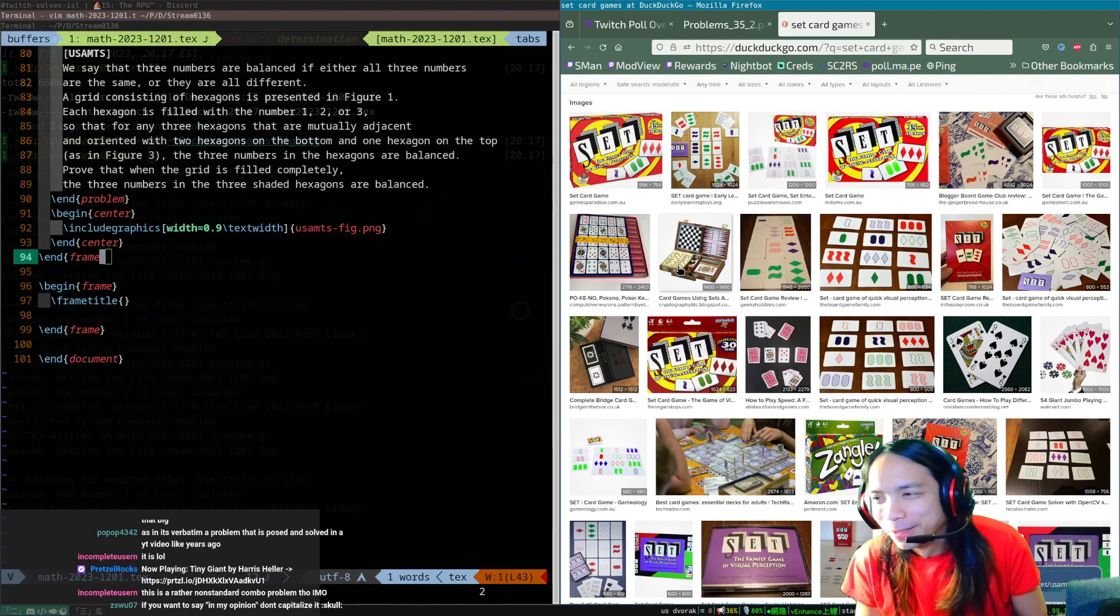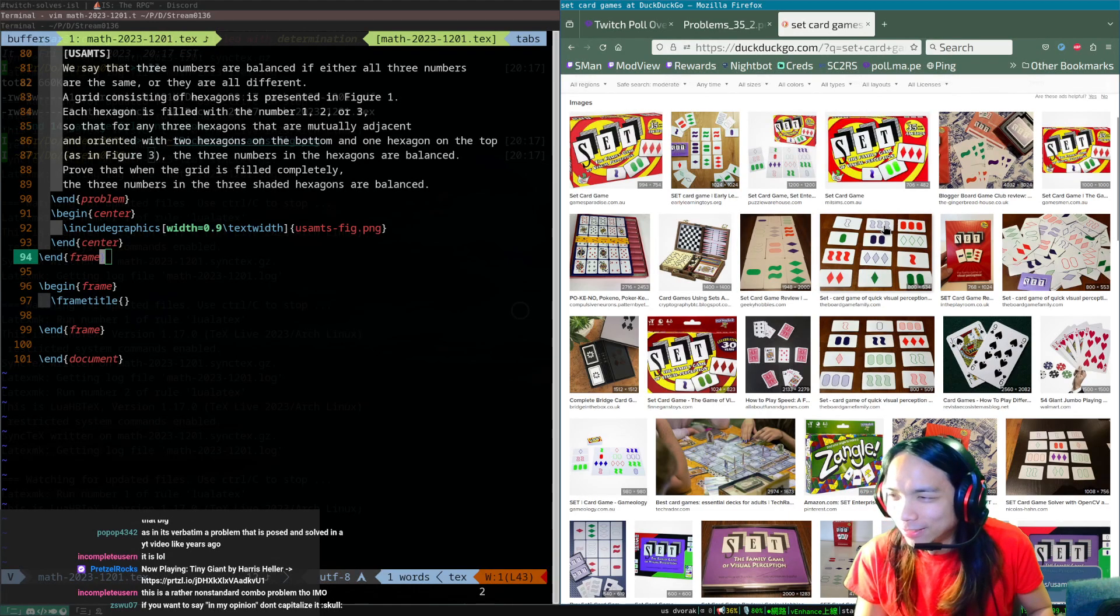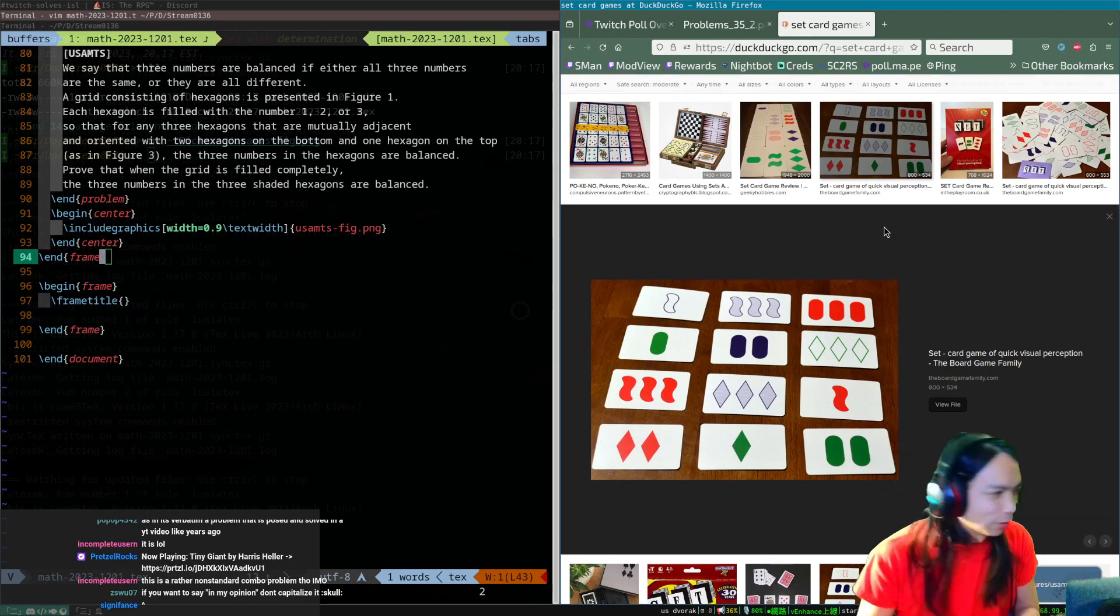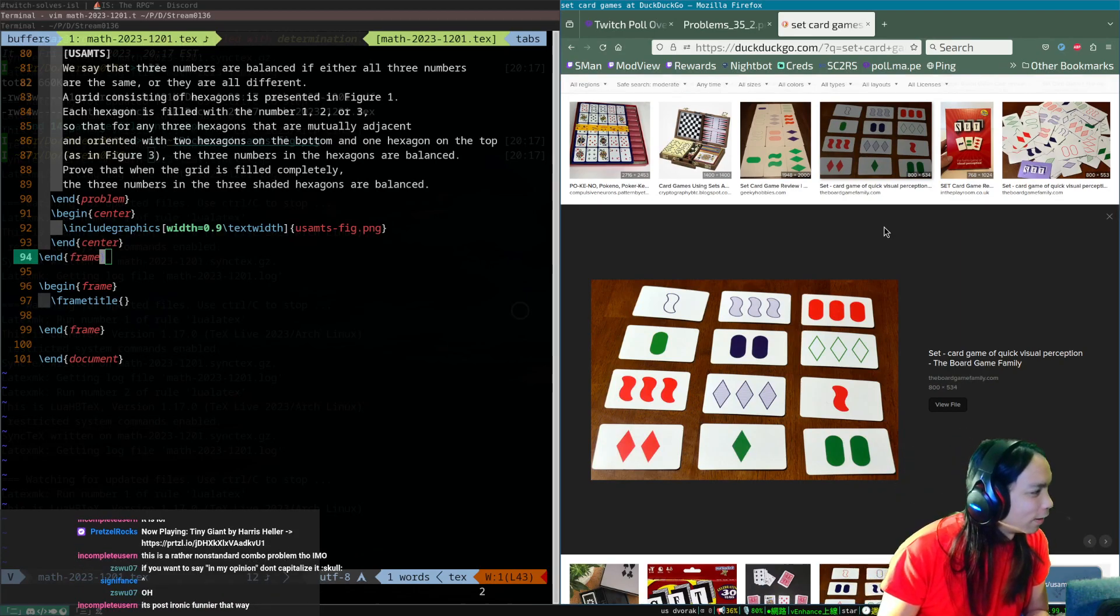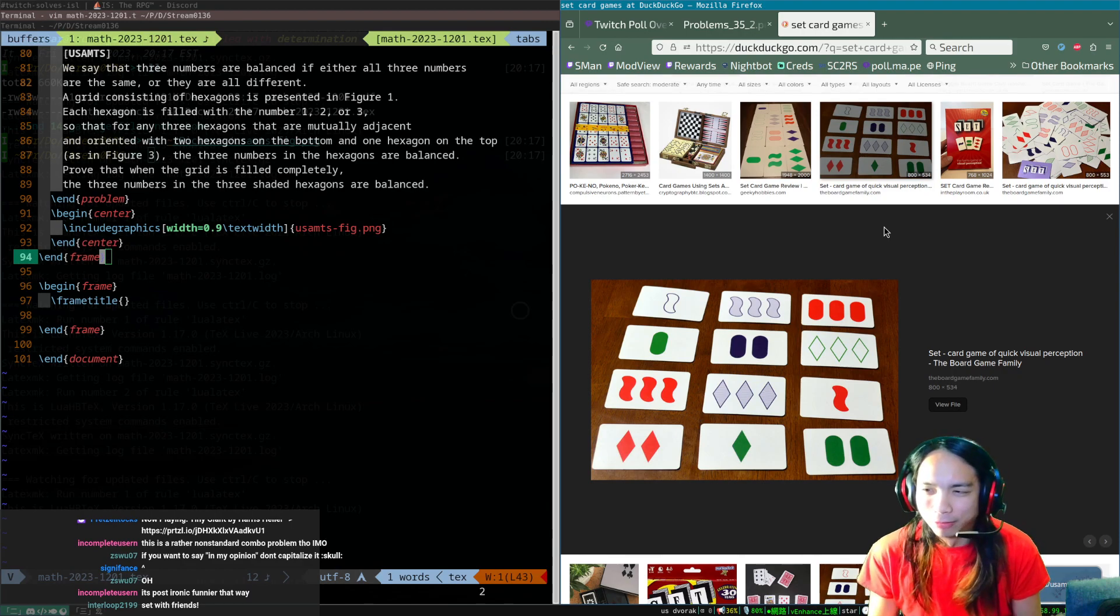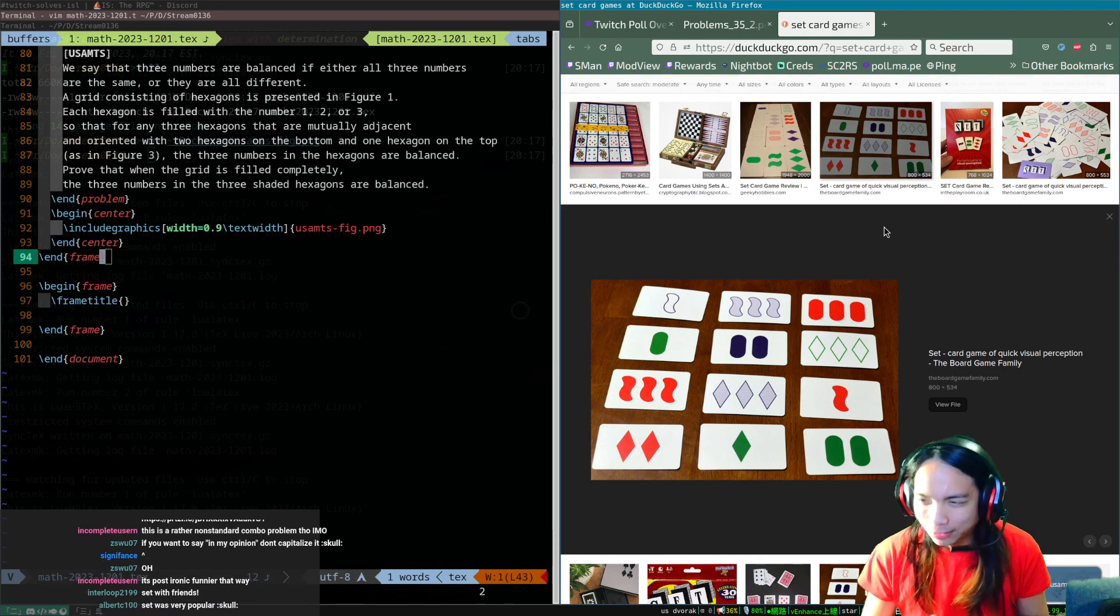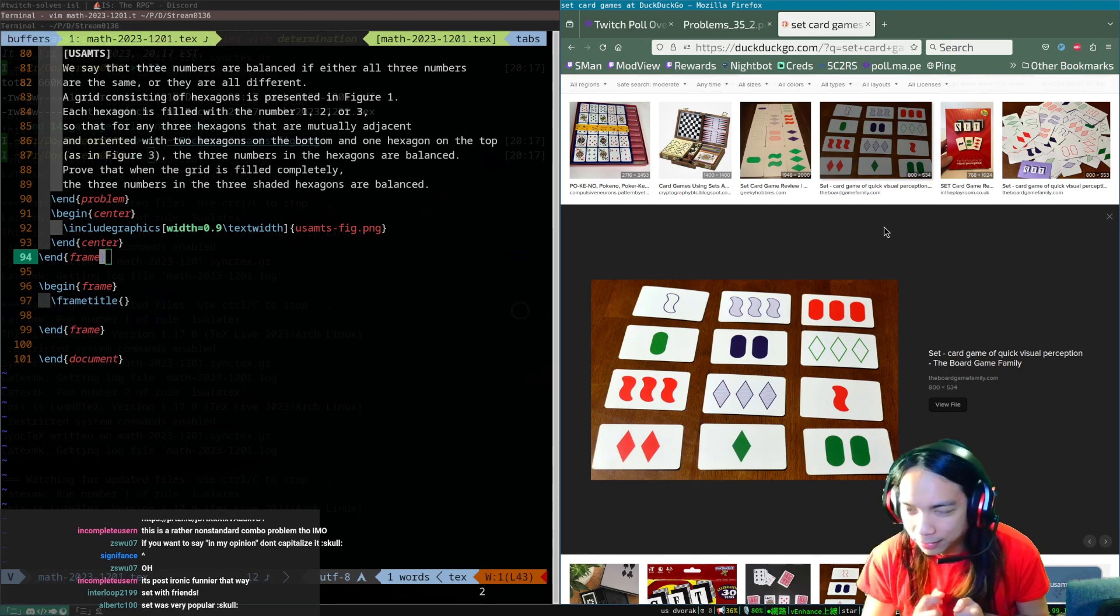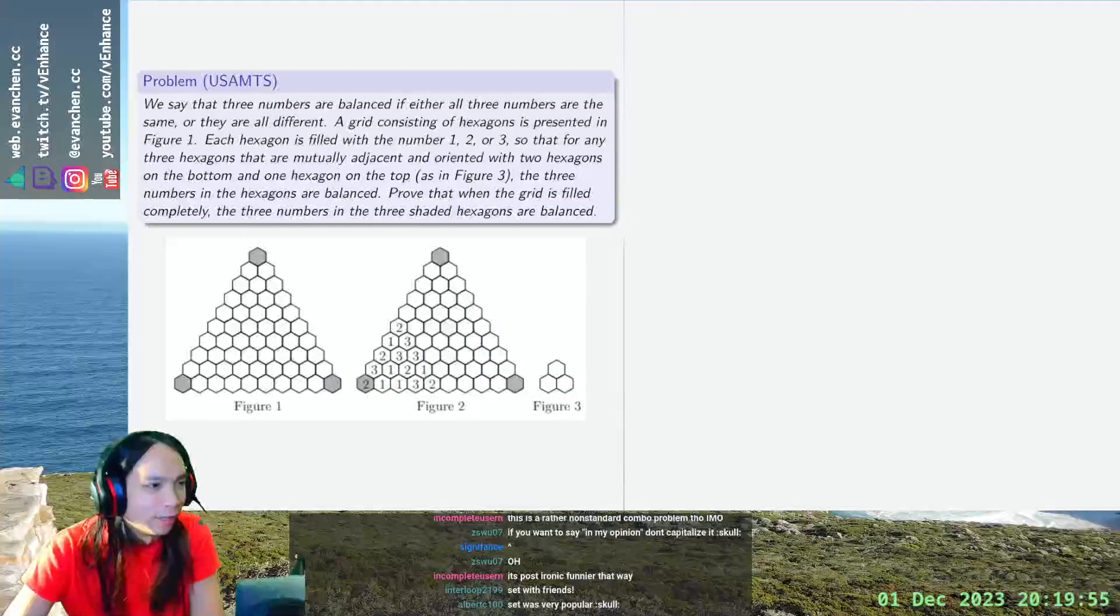Where you need to, it's also the same thing where you have sets of cards and you want to find, for example, the numbers should be all the same or all different. And it's also out of three. And the key observation, if you want to do combinatorics in Set, is the following really beautiful lemma.